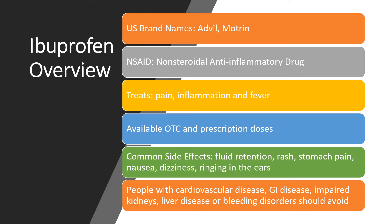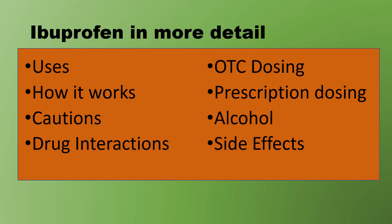It's used to treat pain, inflammation, and fever. Over-the-counter doses as well as prescription doses are available. Common side effects can include fluid retention, rash, stomach pain, nausea, dizziness, and ringing in the ears. People with cardiovascular disease, GI disease, ulcers, intestinal issues, impaired kidneys, liver disease, or bleeding disorders should avoid the use of ibuprofen.